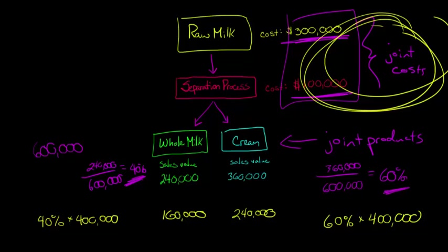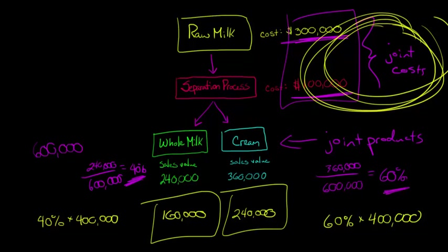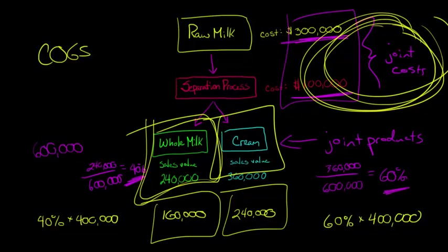But you might be thinking, well then why are we even allocating these joint costs here? What is the point of calculating this $160,000 for whole milk and the $240,000 for the cream? Well, the reason that we allocate the joint costs, we might have to calculate cost of goods sold, or maybe there's a lawsuit that requires us to cost out these products, or maybe we have some kind of government contract where it's specified that we delineate what the cost is of each of these individual products.